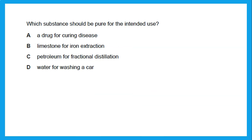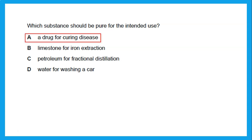Which substance should be pure for its intended use? A drug for curing disease should be pure. What about limestone for iron extraction, petroleum for fractional distillation, or water for washing a car? The water you use to wash a car does not have to be pure. But a drug or medicine taken for curing disease should be pure. So the answer is a drug for curing disease.